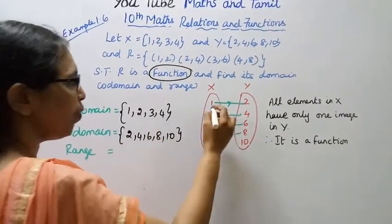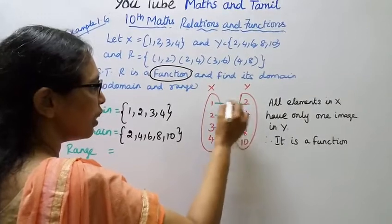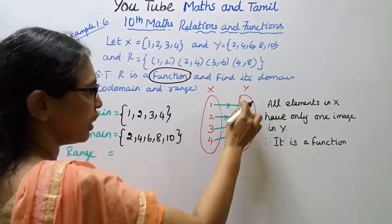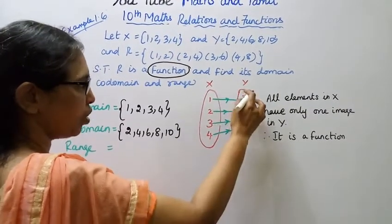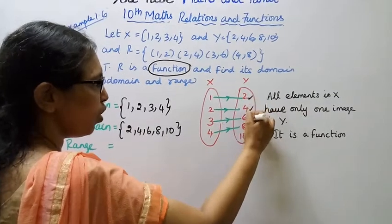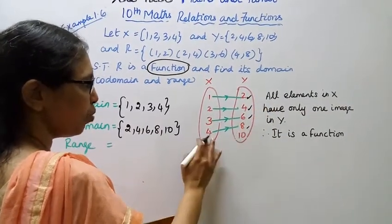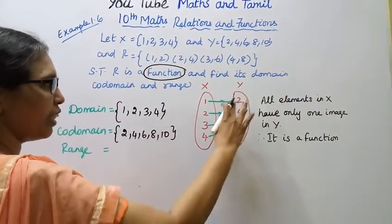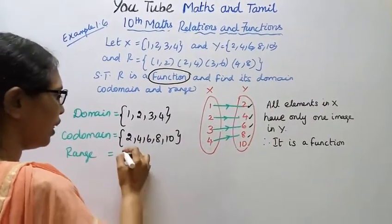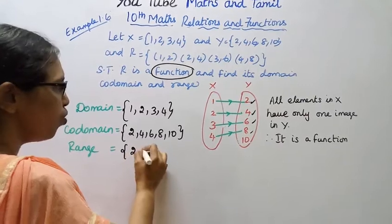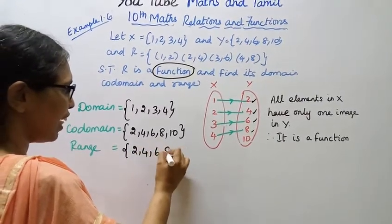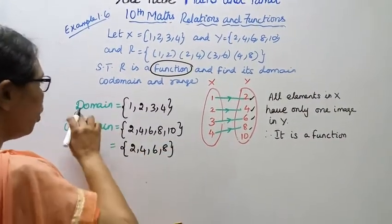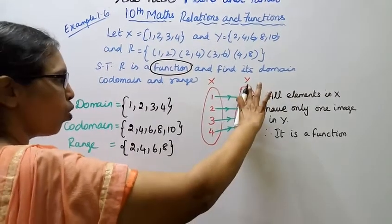Range is created. Mapping can be the 2, 4, 6, 8. Domain, codomain.